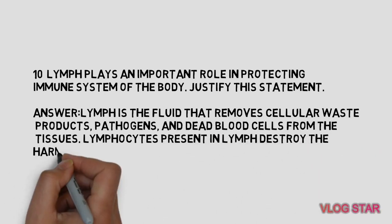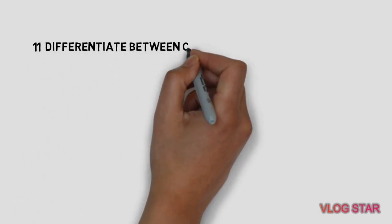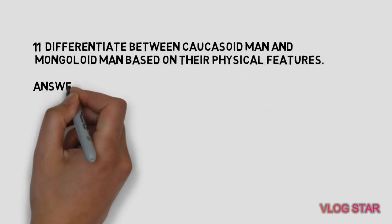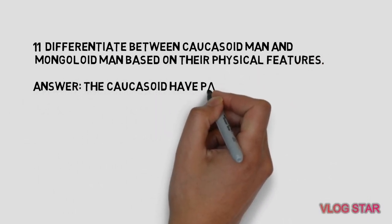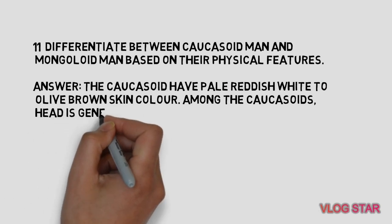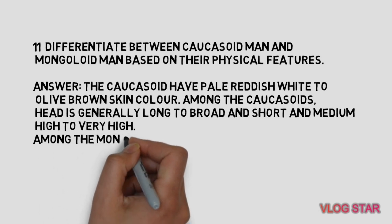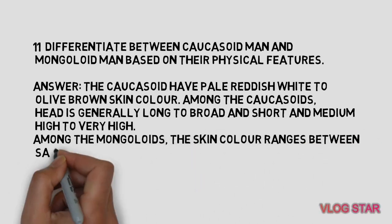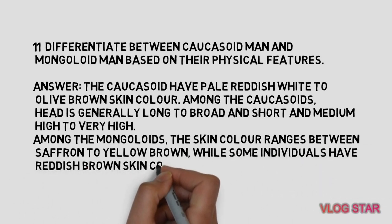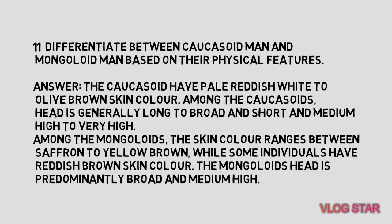Lymphocytes present in lymph destroy harmful pathogens. Differentiate between Caucasoid men and Mongoloid men based on their physical features. The Caucasoids have pale reddish-white to olive-brown skin color; their head is generally long to broad and short and medium to very high. Among the Mongoloids, the skin color ranges between sulfur yellow and yellow-brown, while some have reddish-brown skin. The Mongoloid's head is predominantly broad and medium-high.